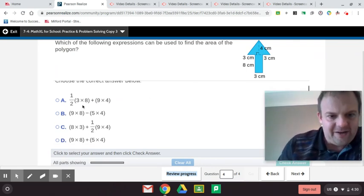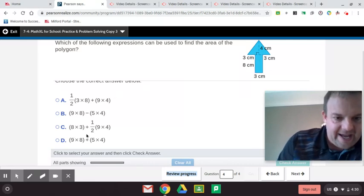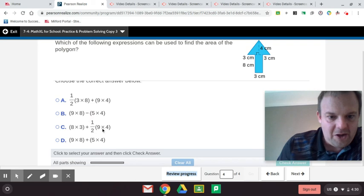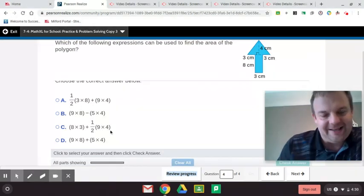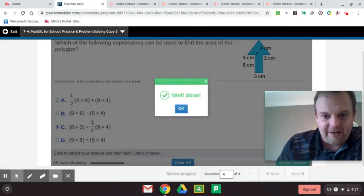One half times three times eight. No, three times eight was the rectangle. So it's not that one. Nine times eight. Oh, they did this base times eight. Nope. Wrong way guys. Eight times three. Yeah. Eight times three was the area of that rectangle plus one half the base times the height. Yeah. The base was nine and the height was four. So guys, this one's it. Look at that.